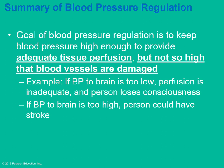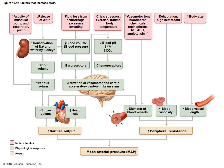Blood pressure must be kept within a normal range — high enough for tissue perfusion, meaning enough pressure in the capillaries for nutrients and oxygen to move out of the blood into the interstitial fluid to supply cells with what they need and remove waste products. If blood pressure in the brain is too low, the person will lose consciousness. If too high in the brain, the person can suffer a stroke. Various factors affect mean arterial pressure, including dehydration, stress, exercise, and body size.